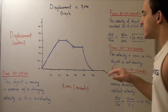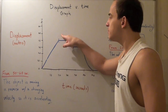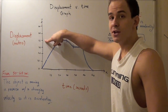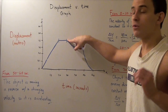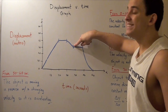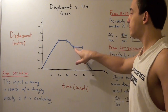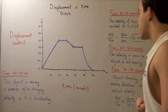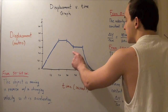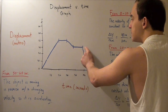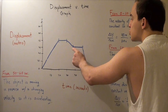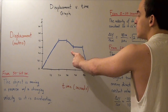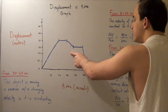Notice that from the start to twenty seconds, our object traveled a displacement of forty meters; from twenty to thirty seconds, a displacement of zero; and here it traveled ten meters back. So at this point our displacement is thirty meters. The next interval, from forty to fifty seconds, has a slope of zero — same as before — so our object's velocity is zero and its acceleration is zero.